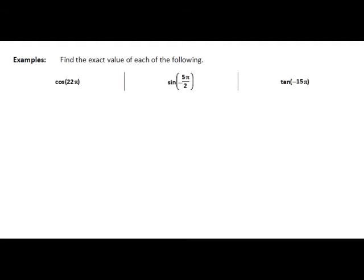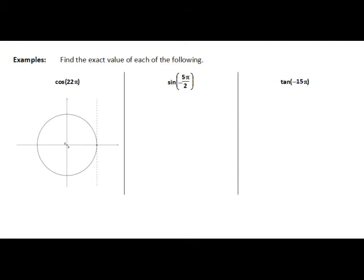So let's have a look at a couple of examples. We want to find the exact value of each of the following — finding the exact value of cos of 22 pi first of all. So the first thing we want to think about is our unit circle, and where in the unit circle is 22 pi.